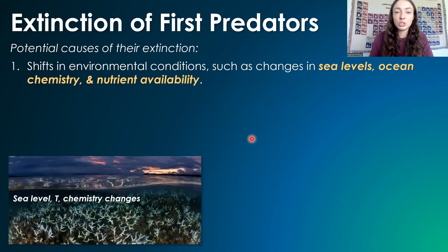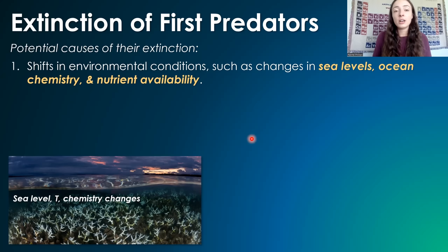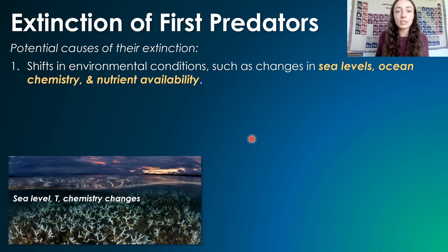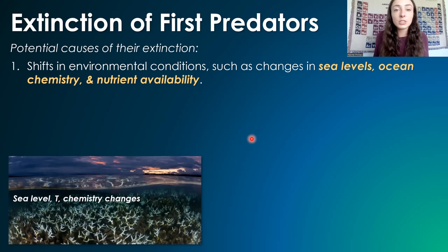One potential cause is shifts in environmental conditions like changes in sea levels, ocean chemistry, and nutrient availability. They might not have dealt with such changes as well as trilobites, which may have been more diverse by then and therefore more change-resistant. The more diverse a group of organisms is, the more likely one or more of their groups will survive such changes, because maybe they've adapted something that can handle those conditions or they're just more versatile.